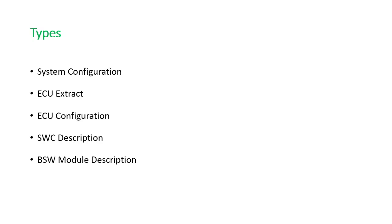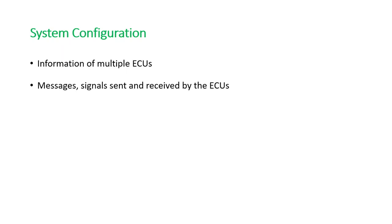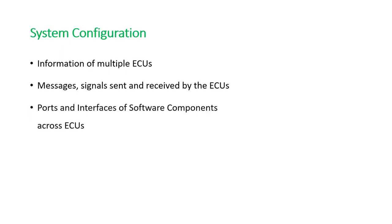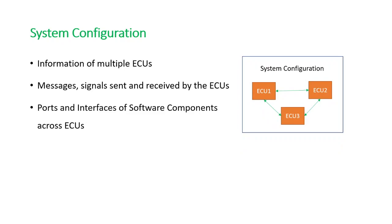The first type is the System Configuration file. It contains information of multiple ECUs — the messages and signals sent and received by ECUs in a network, and the ports and interfaces of software components across ECUs. As you can see in the image, the system configuration is represented as a network of ECUs, capturing the messages, signals, and components present on each ECU. You can remember that the system configuration contains information of a group of ECUs.